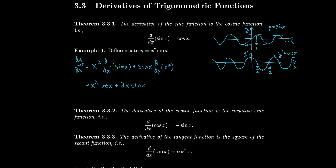Similar to how the derivative of sine is cosine, the derivative of cosine is almost sine — it's minus sine. If you look at cosine and its horizontal tangents, you'd expect the derivative to be 0 there, which it is for sine. But cosine goes down over here, so it should have a slope of minus 1, and then goes up with a slope of plus 1. It's the exact same function, but flipped upside down. So the derivative of cosine is minus sine.